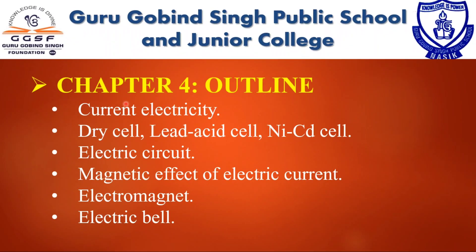In chapter 4, we got familiar with terms like electric current, electrostatic potential, and potential difference. The formula of electric current equals electric charge divided by time, with unit ampere. Electrostatic potential has the unit volt. We studied the construction of dry cell, lead-acid cell, and nickel-cadmium cell, then learned how to set up an electric circuit, the magnetic effect of electric current, construction of an electromagnet, and its application — the working of an electric bell.